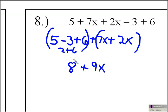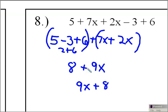We can rearrange this because I always like to put my variable in front — that's just one of the rules of algebra. So I'm going to rewrite it as 9x plus 8. I can do that because of the commutative property, where I can switch the terms around.